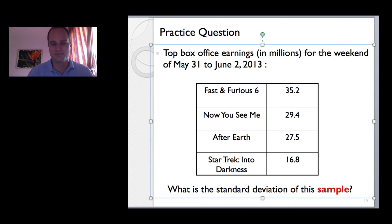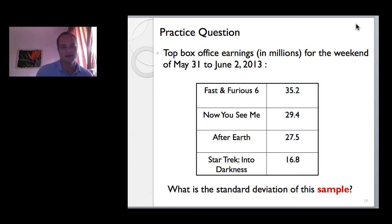Okay. I think we're involved here. Are we back on? Okay. Yeah, we're good. To give us some practice with the standard deviation and the variance, I have the box office earnings in millions of dollars rounded for the weekend of May 31 to June 2nd in 2013. Fast and furious six. Wow. Six, huh? Amazing. $35.2 million in that weekend. Now you see me. 29.4. After Earth. 27.5 million in Star Trek into darkness. 16.8. Nerdy movies is what we're dealing with here. Okay. So the question says, what's the standard deviation of this sample? So I'm just telling you it's a sample.